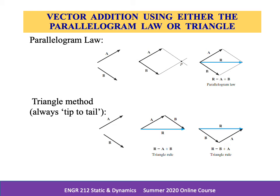We can also add b to a using the triangle rule, which is a special case of the parallelogram law, whereby vector b is added to vector a in a head-to-tail fashion — that is, by connecting the head of a to the tail of b. The resultant r extends from the tail of a to the head of b. In a similar manner, r can also be obtained by adding a to b. In other words, the vectors can be added in either order.